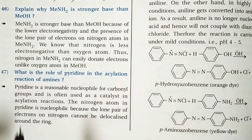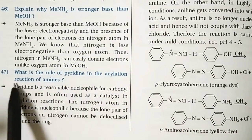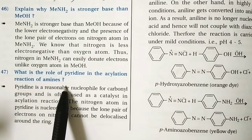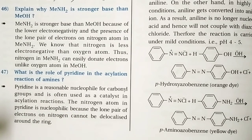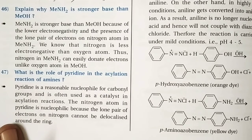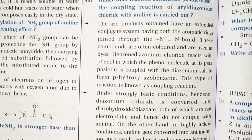Question 47: What is the role of pyridine in the acetylation reactions of amines? Pyridine, being a base, removes the hydrochloric acid formed during the reaction, driving the acetylation forward.